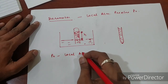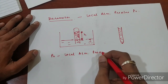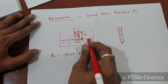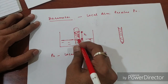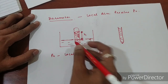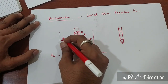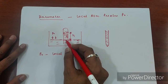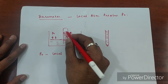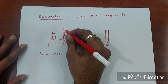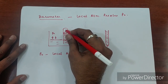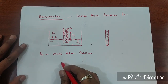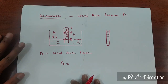By this arrangement, we are required to find P0, the local atmospheric pressure. At any point at this level, the intensity of pressure is the same. The pressure at this point is nothing but atmospheric pressure. Here, a vacuum is created and the pressure at the top of the tube will be zero. So we calculate pressure at this point, which will be the local atmospheric pressure.